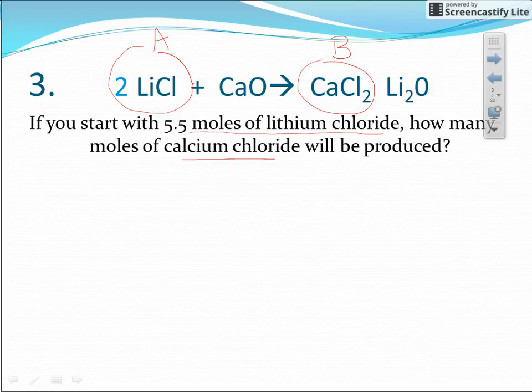The equation is balanced with a 2, 1, 1, 1. There should be a plus sign here. Okay, all right, so let's start off our problem by starting off with our given. We always begin with our given 5.5 moles, and that's of lithium chloride, LiCl.